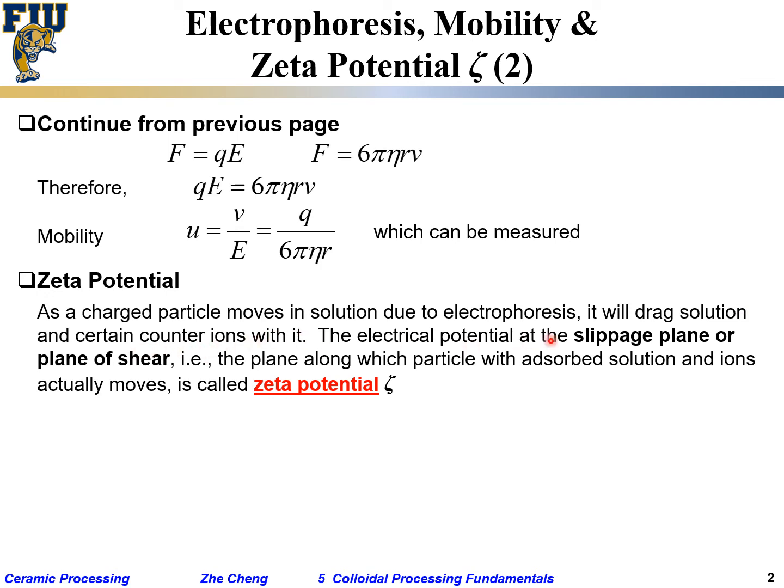The electrical potential at the slippage plane or plane of shear is important. The particle has an interface, but when it moves it drags a certain thickness of water together with it. The slippage plane is the boundary between the part of water that moves with the particle and the remaining water. This is at a certain distance from the particle surface.